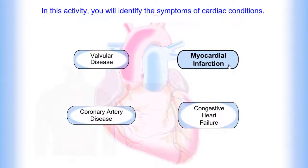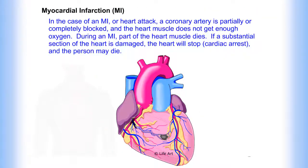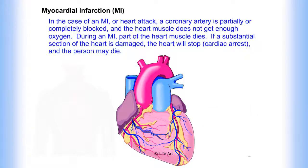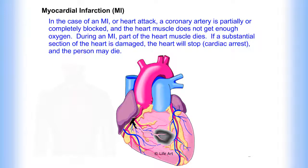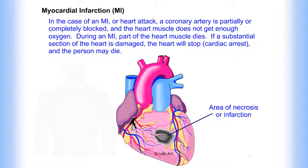Myocardial infarction. In the case of an MI, or heart attack, a coronary artery is partially or completely blocked, and the heart muscle does not get enough oxygen. During an MI, part of the heart muscle dies. If a substantial section of the heart is damaged, the heart will stop and the person may die. Here is the area of necrosis, or infarction.